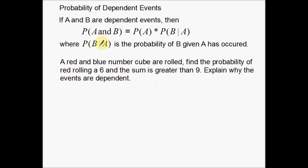You can think of this vertical bar as meaning 'this event has occurred' — after this bar, this event has occurred. That's one way you can look at it. Alright, so here's an example of a dependent event.